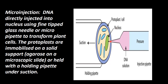Into the nucleus, straight away, a DNA solution is introduced by pressure. This is called the injection pipette — using a fine-tipped glassy needle or micro-pipette to transform the plant cells, to transform and introduce DNA into them.